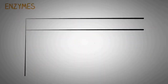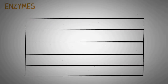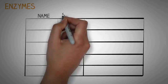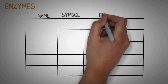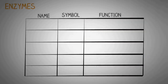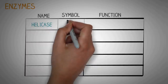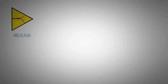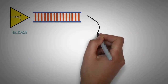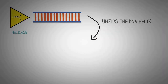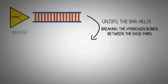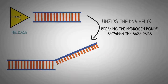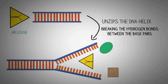Now let's talk about the various enzymes that make this complex process of DNA replication possible. In this table we will study the name, symbol, and function of each enzyme involved. The first enzyme is helicase. The main job of helicase is to unzip the double helix structure of the DNA by breaking the hydrogen bonds between the base pairs, separating the two strands and creating the replication fork.